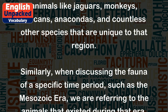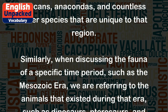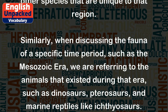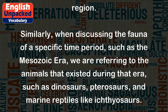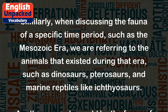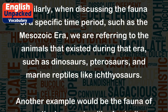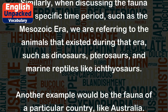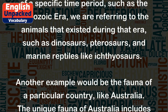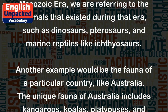Similarly, when discussing the fauna of a specific time period, such as the Mesozoic era, we are referring to the animals that existed during that era, such as dinosaurs, pterosaurs, and marine reptiles like ichthyosaurs.